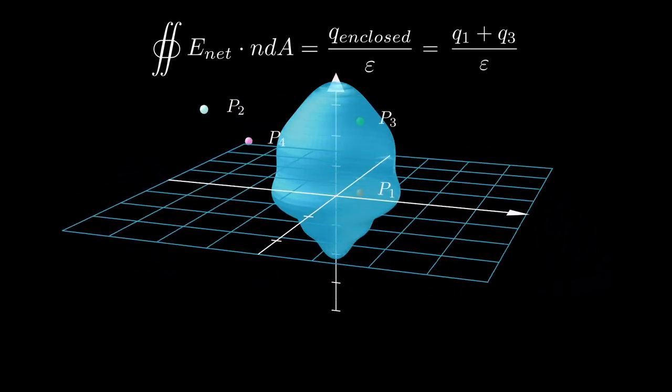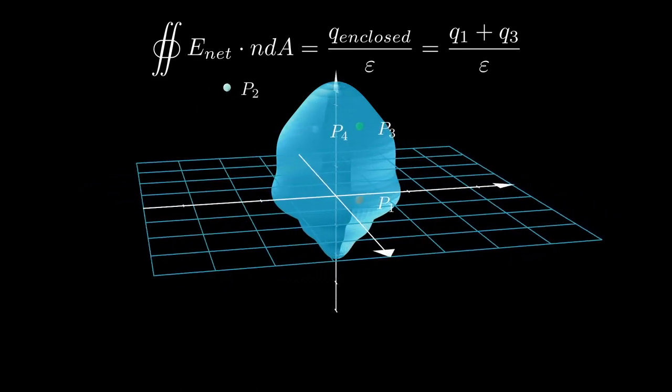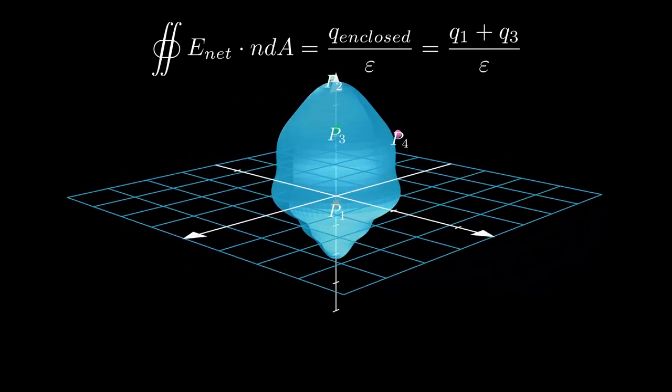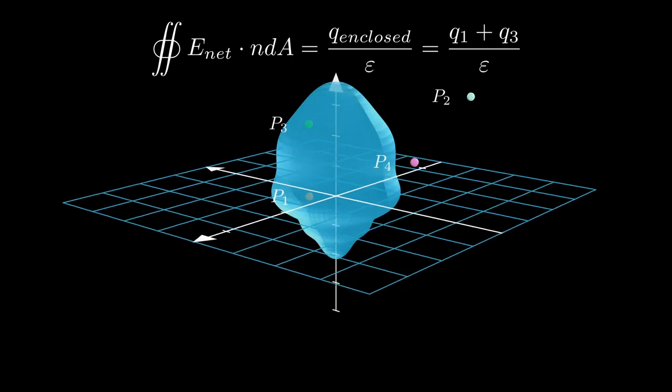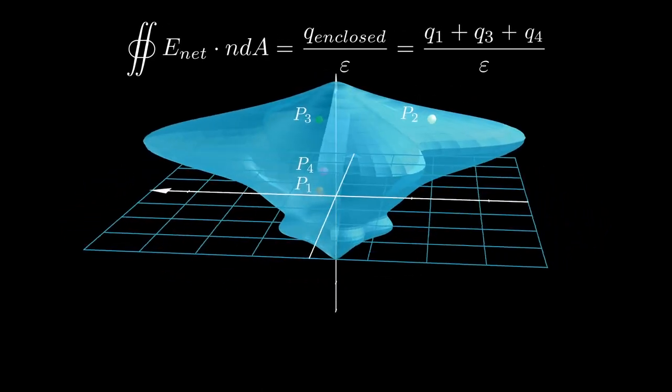In this case, the enclosed charge is q1 plus q3. When you think about it, it's actually quite impressive that the flux always evaluates to q enclosed over epsilon-naught, no matter how complicated the surface is.